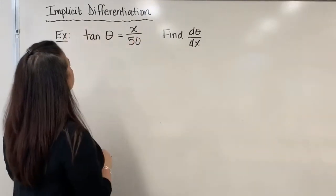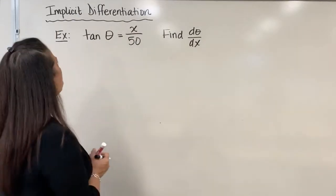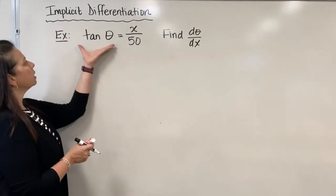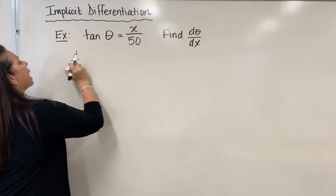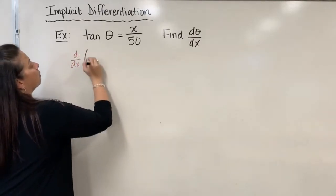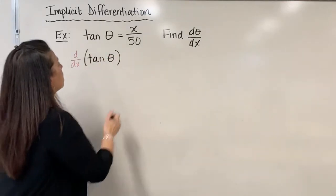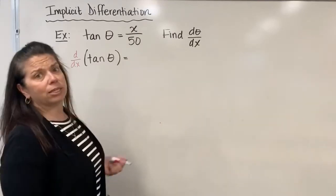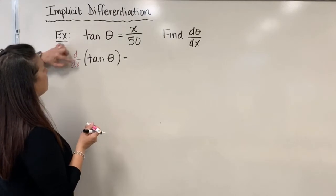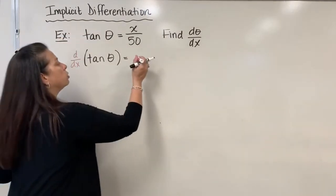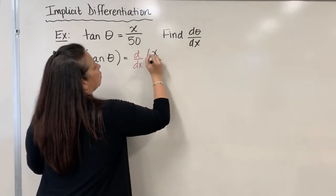So as I take this equation and try to find its derivative implicitly, I'm going to start by taking the derivative of the left side. We're going to write d/dx of tan(θ) — I'll come back and figure out what that is in a minute. And remember, whatever I do to one side of the equation, we've got to do to the other side. So if I'm taking the derivative with respect to x of this piece, I should do it to the other side as well: d/dx of x over 50.